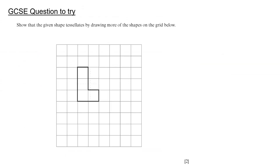Here's a GCSE question for you to try. Please copy this out onto centimeter squared paper and show that the given shape tessellates by drawing more shapes on the grid. Pause the video now and have a go. For the answer, we could draw a few more on the grid to show that it will tessellate — so you could do another one here, and another one here. Basically, what this shows is they join together with no gaps.